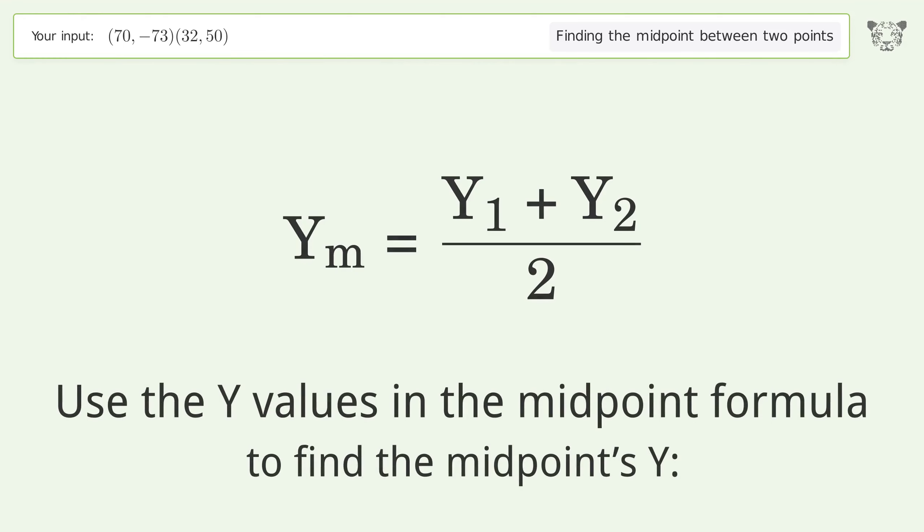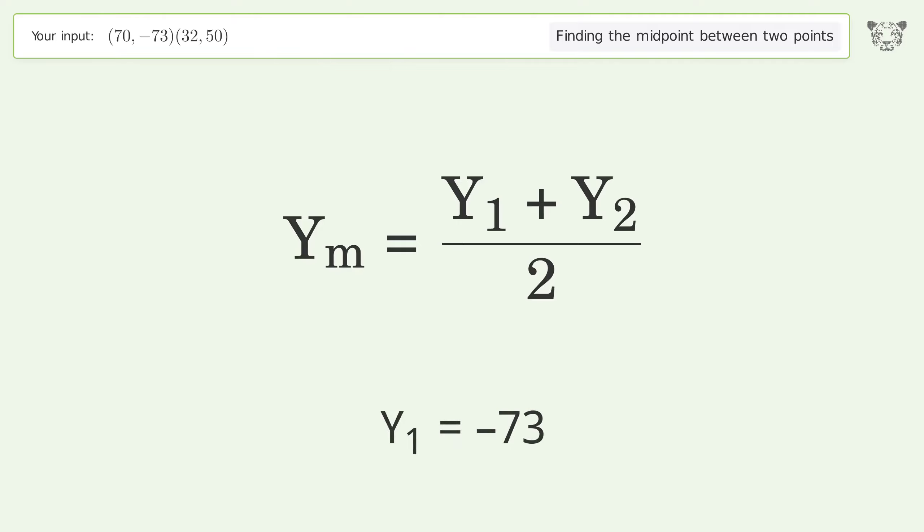Use the y values in the midpoint formula to find the midpoint's y. y1 equals negative 73, y2 equals 50.